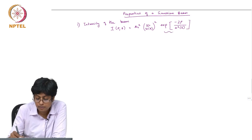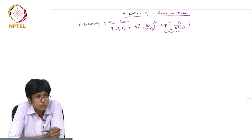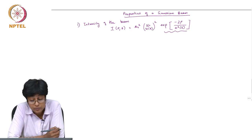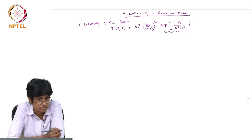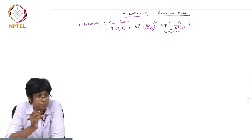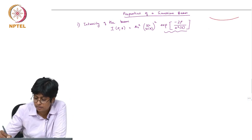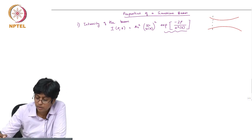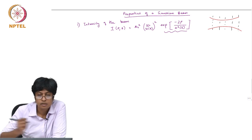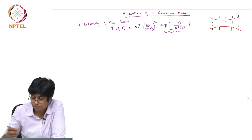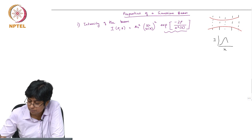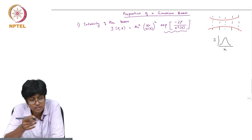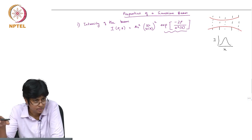What does this term do to the intensity? It tells you how the transverse intensity varies. And you can see that while it is a function of z, the form of this expression is the same irrespective of the value of z — the form is exactly the same. So if you were to look at a Gaussian beam propagating, irrespective of which plane you look at, at any plane the cross-section — let us say intensity versus x — is going to be Gaussian shaped. What will change if I go to another plane is not the form, not the shape.